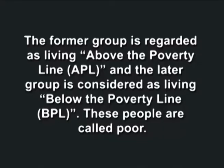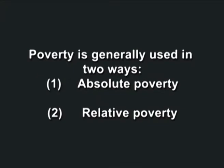The poverty line divides the population into two groups: those who have minimum purchasing power or more, and those who do not. The former group is regarded as living above the poverty line (APL) and the latter group is considered as living below the poverty line (BPL). These are the people who are called poor. Poverty is generally used in two ways: absolute poverty and relative poverty.